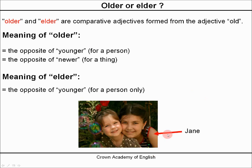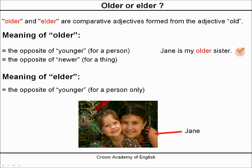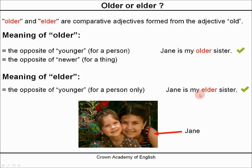Example: this is Jane. We can say Jane is my older sister — that is correct. And we can also say Jane is my elder sister — this is also correct.